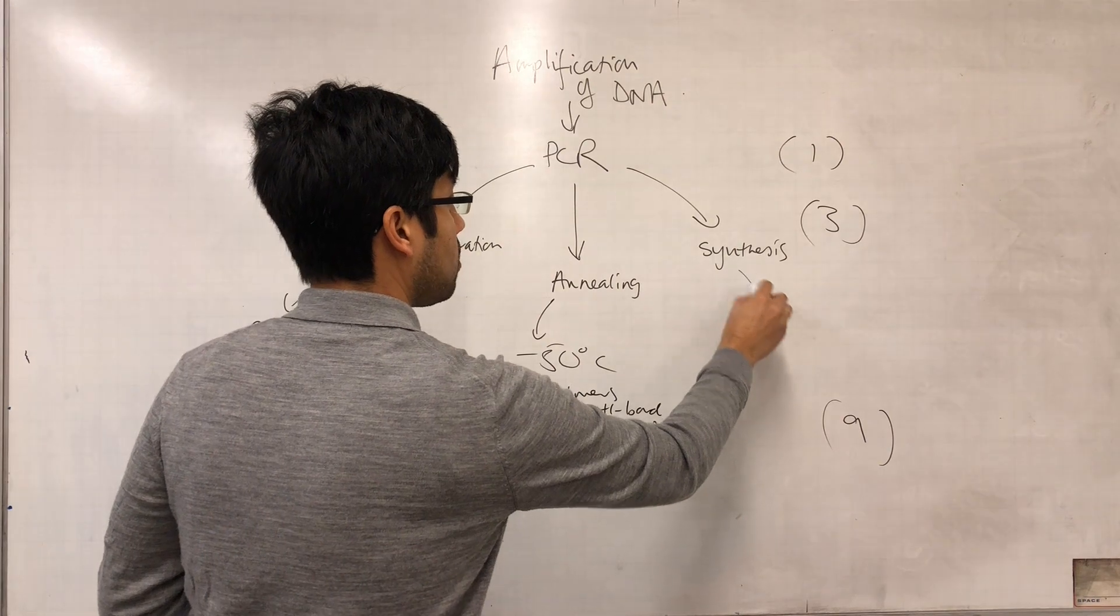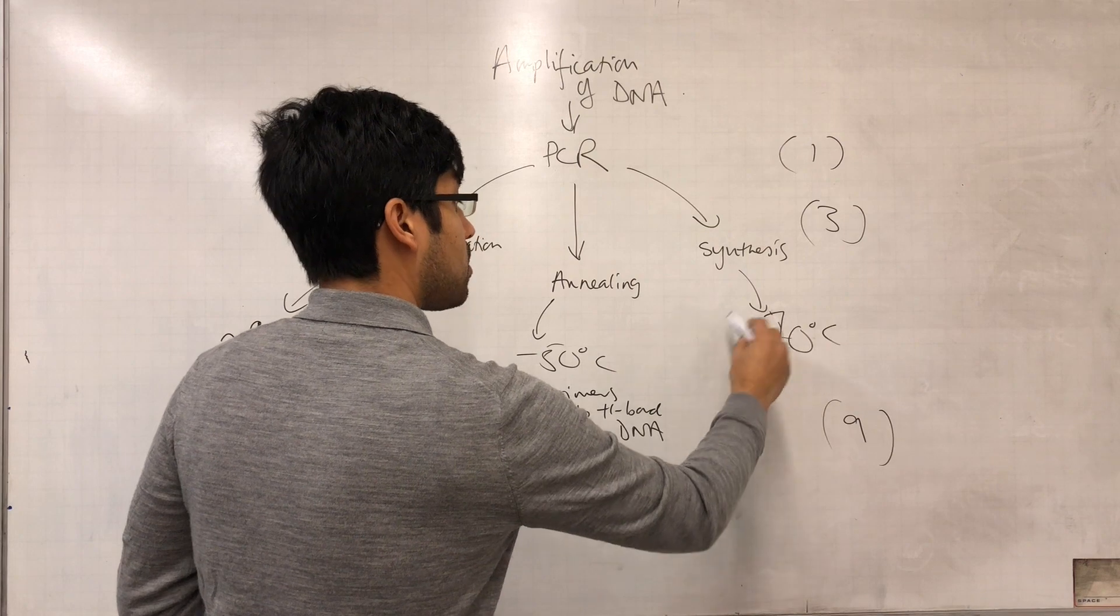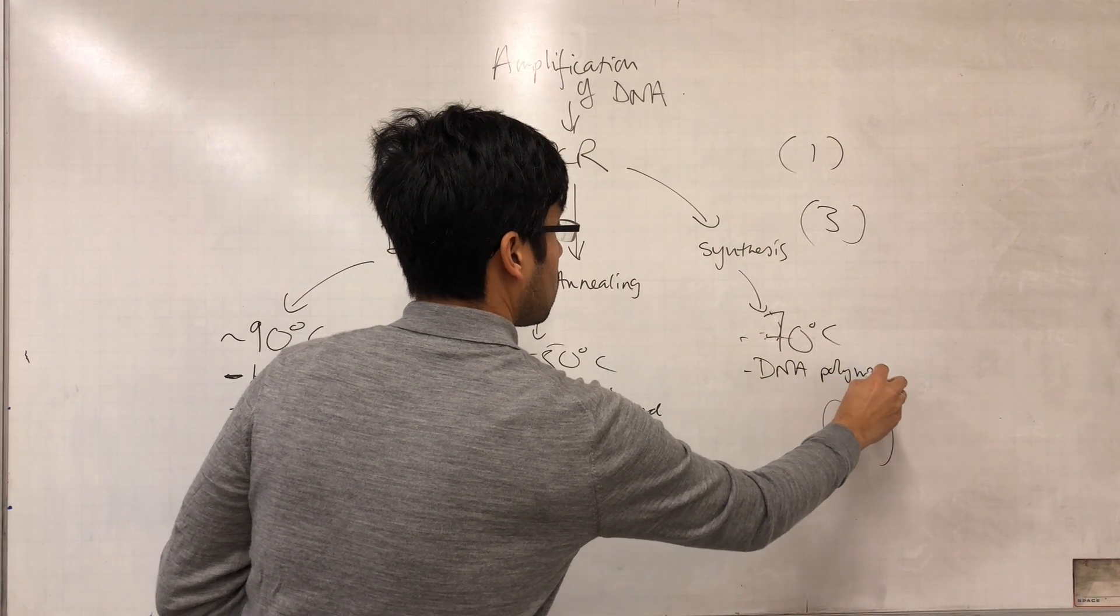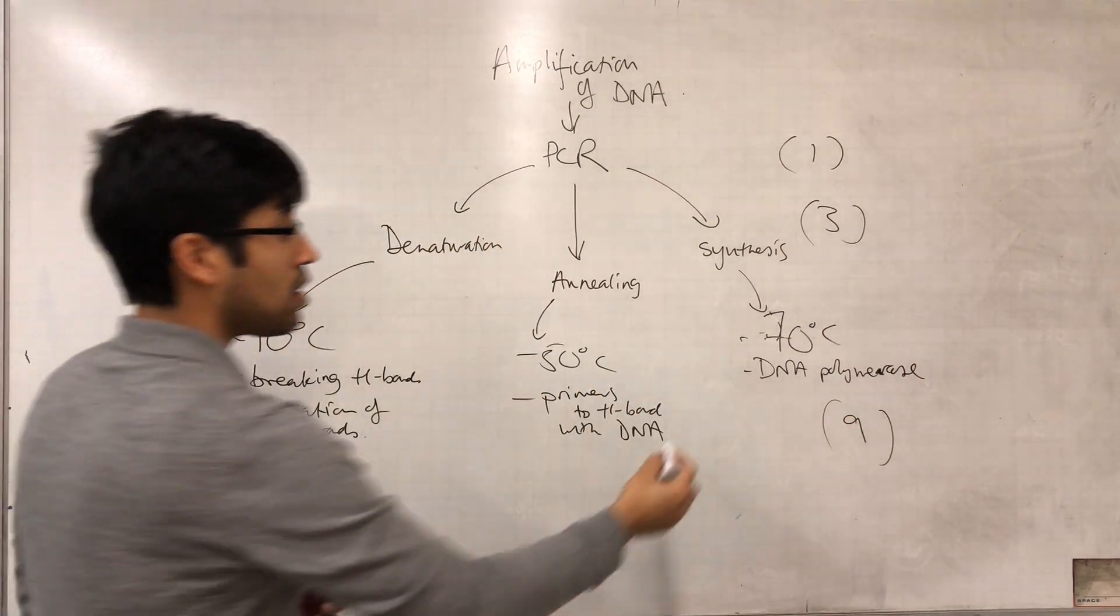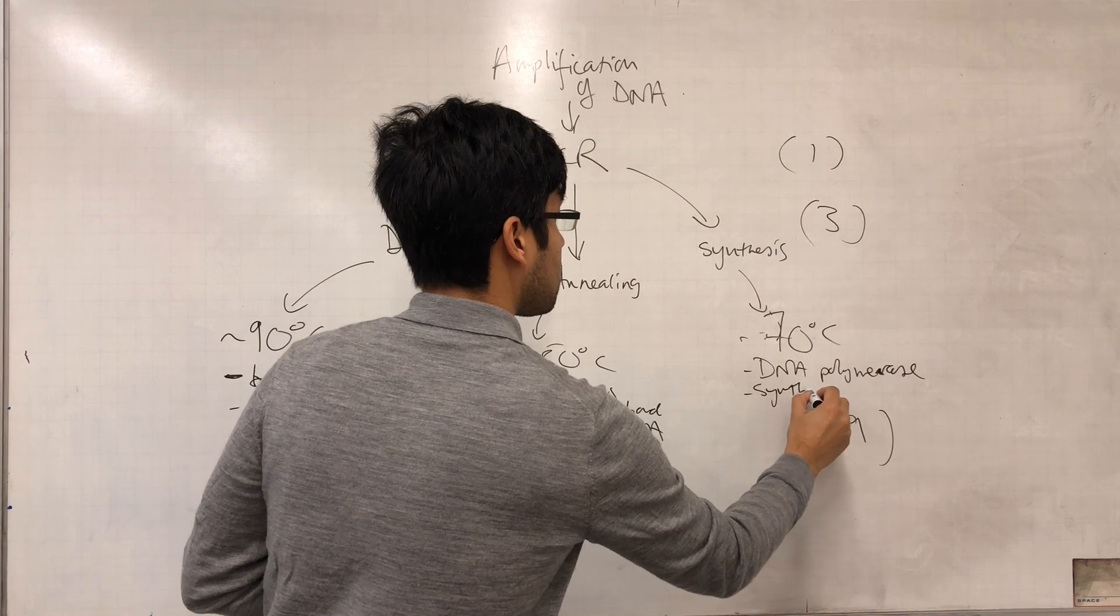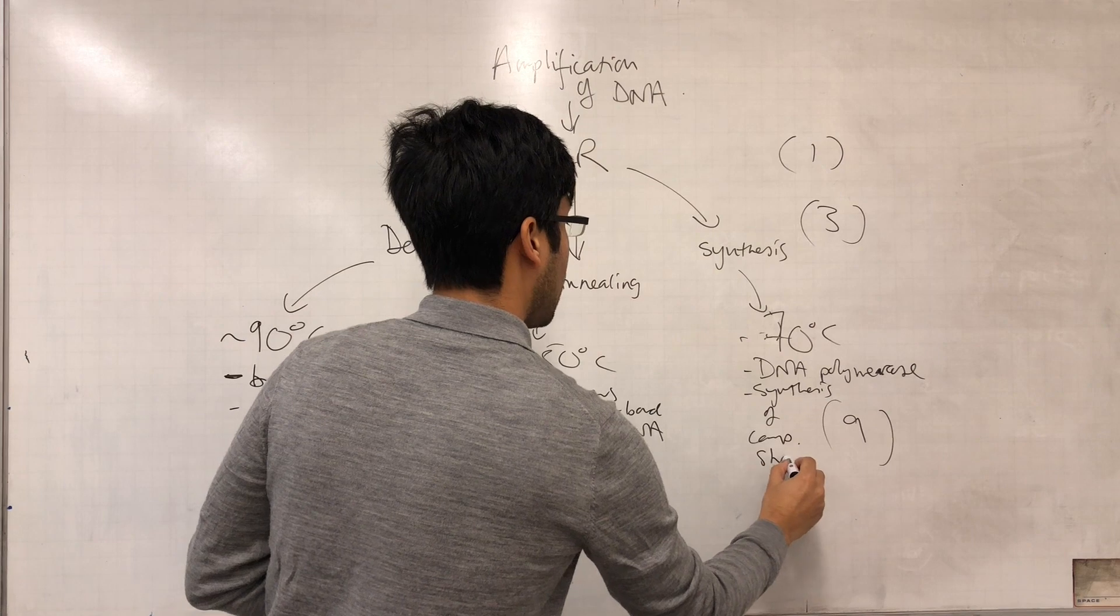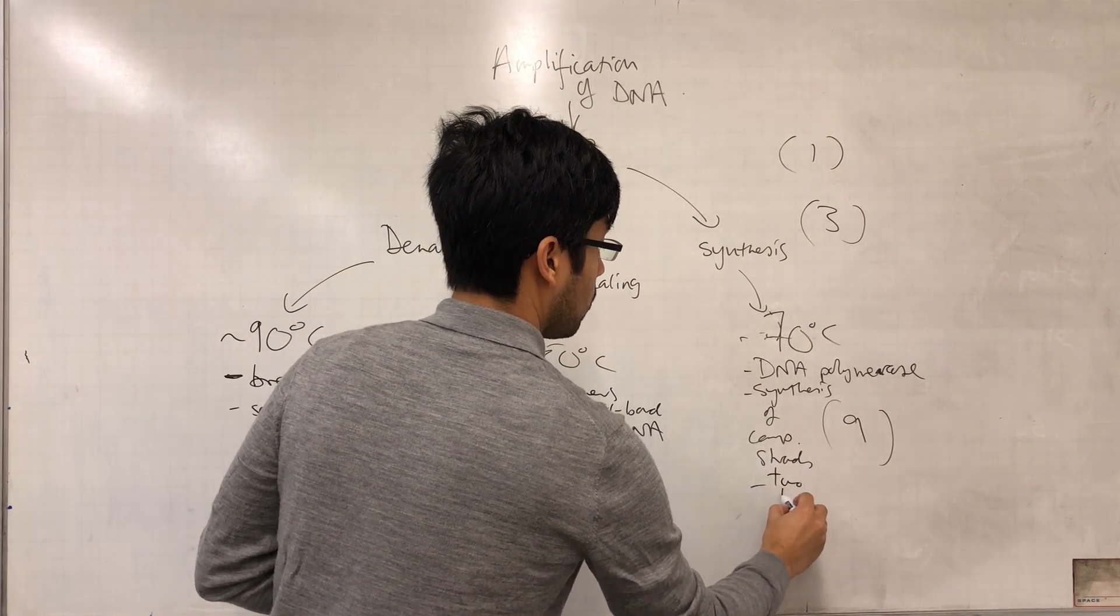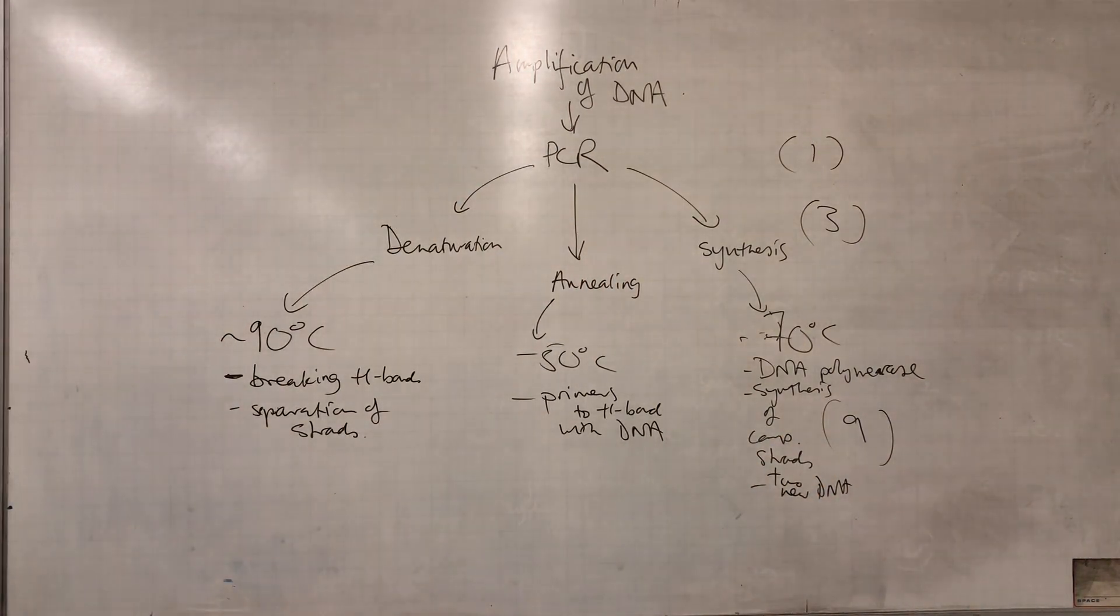And finally that we raise the temperature to about 70 degrees. This causes the DNA polymerase to bind, which causes synthesis of complementary strands, giving us two new DNA molecules from the original one and so the cycle continues. But you get my point.